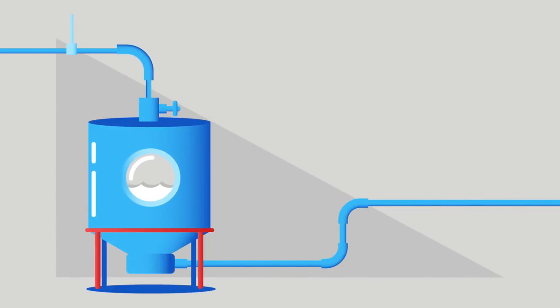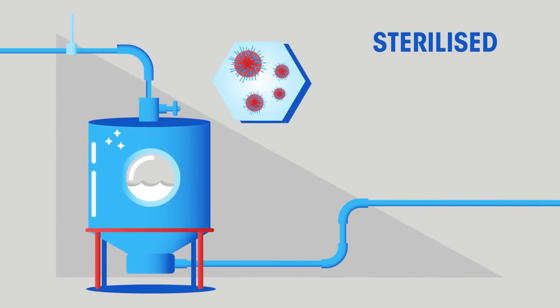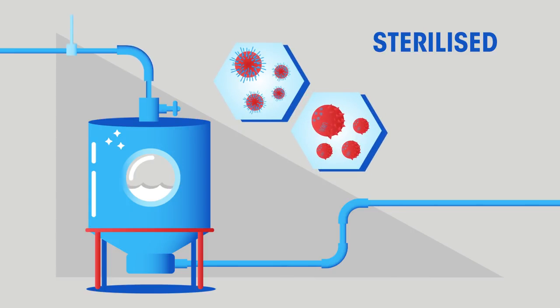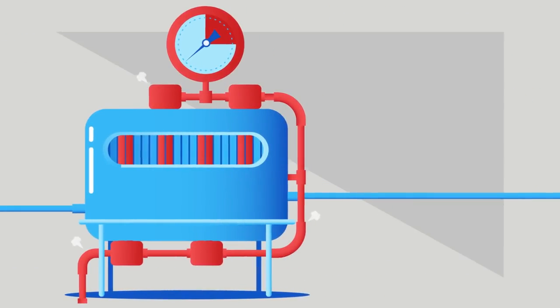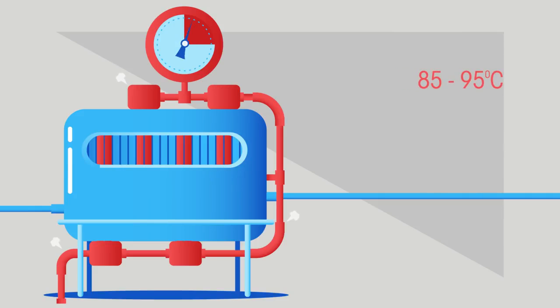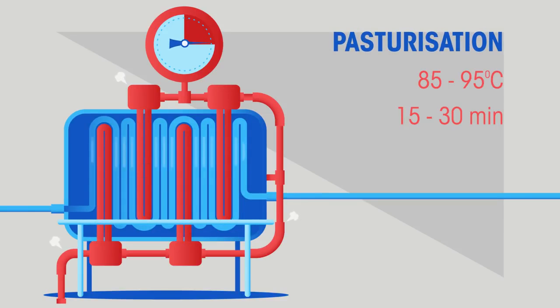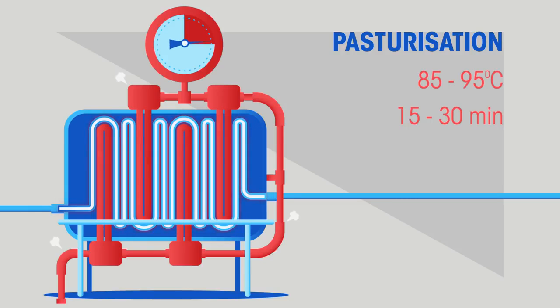Before we start the next steps, all of our equipment needs to be sterilized to kill any unwanted bacteria and other microorganisms. Now we are ready to start. The milk is heated to somewhere between 85 and 95 degrees Celsius for between 15 and 30 minutes. This is a process called pasteurization, and is also done to kill any bacteria and other microorganisms that are naturally found in the milk.